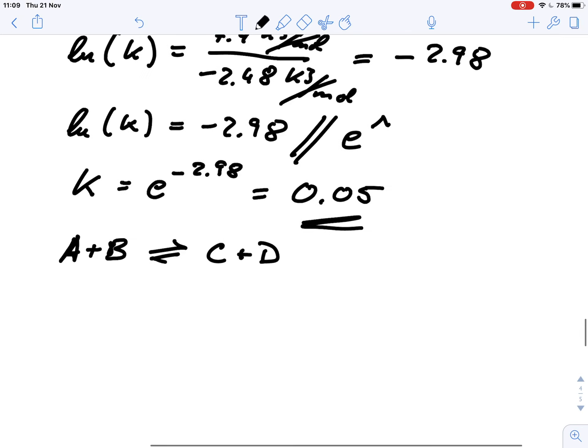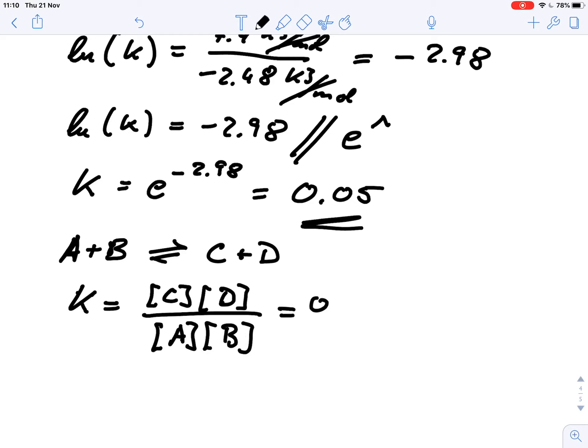So that's our equilibrium constant for the reaction A plus B reversible reaction C plus D. And the equilibrium constant K would be defined as the concentration of C times D divided by the concentrations of A times the concentration of B. And this is 0.05.